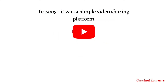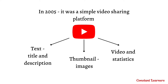For example, when YouTube was created in 2005, it was a simple video sharing platform. But now it has so much to offer — we can see the title, description, likes, views, dislikes, playlists, other suggestions, shorts, etc. So it is a combination of text, images, videos, statistics, and all of this counts as data.